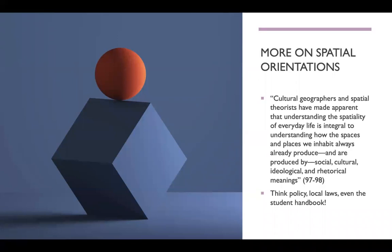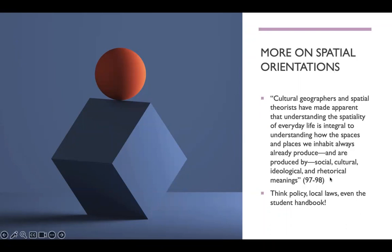Here's just more information on spatial orientations pulled from the article. Hurley mentions that cultural geographers and spatial theorists have made apparent that understanding the spatiality of everyday life is integral to understanding how the spaces and places we inhabit always already produce and are produced by social, cultural, ideological, and rhetorical meanings. So if you remember positionality from the last lecture, this is kind of the same idea. But here Hurley is saying, on top of our identities, the places too are social and cultural and ideological, and they'll have different meanings depending on which culture you're coming from, what ideology you're coming from, and even how you talk about it — so the rhetorical meanings there.